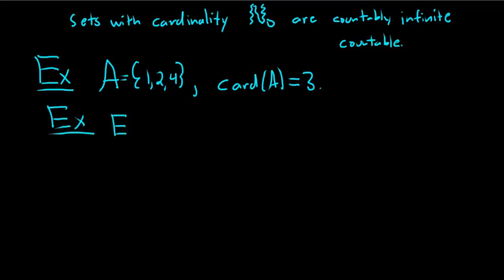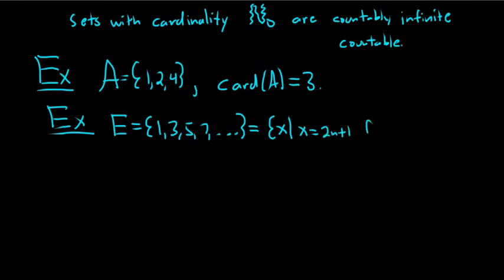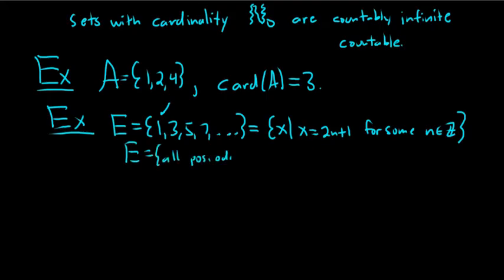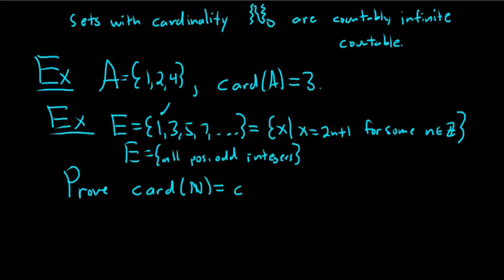Now let's prove something more interesting. Let E be the set of all positive odd integers: 1, 3, 5, 7, and so on. E can be written as {x : x = 2m + 1 for some m in Z with m ≥ 0}, capturing every positive odd integer. We're going to prove that the cardinality of the natural numbers equals the cardinality of E.